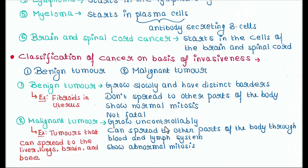The second is malignant tumor. They grow uncontrollably — meaning cells keep on dividing continuously. They can spread to other parts of the body through the blood and lymph system. They show abnormal mitosis. For example, tumors that can spread to the liver, lungs, brain, and bone.